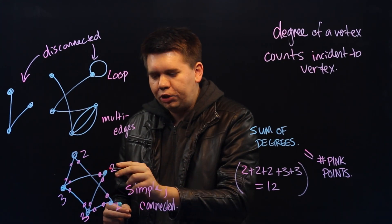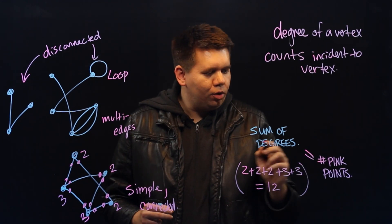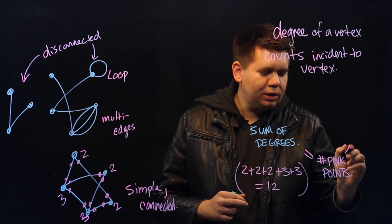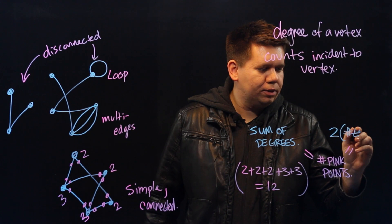we can observe each edge has on it two pink points. Therefore, the total number of pink points will just come out to equal two times the total number of edges.